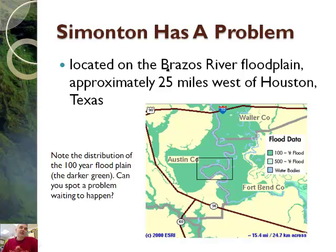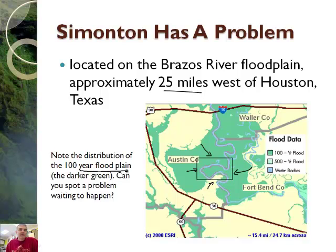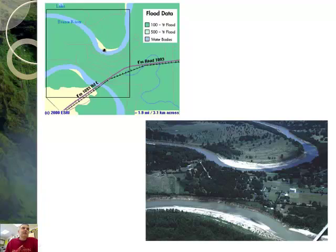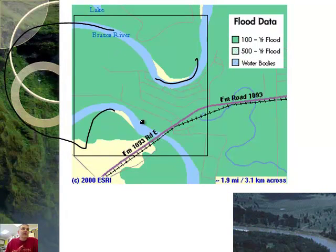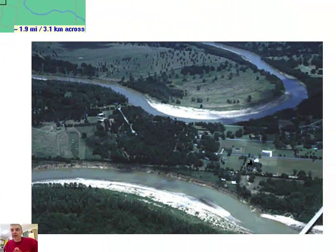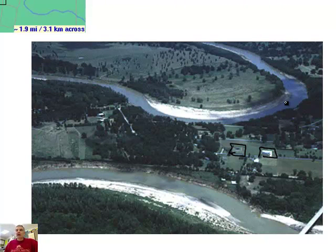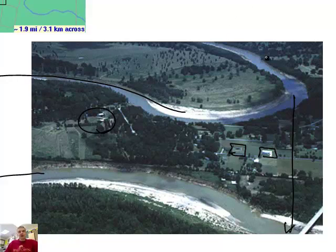Here's an interesting real-world situation. Simiton has a problem — it is located on the Brazos River floodplain, approximately 25 miles west of Houston, Texas. We have a map, and the problem is this lake is meandering. Note the distribution of the hundred-year floodplain — that's the darker green. In a hundred years, this whole area will get filled up with water at certain times. If you happen to have a house right here, you've got an issue. If you zoom into the bend, it goes way out over here. Each of these is a road, and there are houses here and here. At some point, this river is going to want to join up right here, and that becomes an oxbow lake — someone's wonderful house is right there and they're going to have a problem.